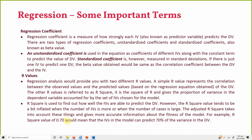For example, an R-square value of 0.70 would mean that the IVs in the model can predict 70 percent of the variance in the DV — 70 percent of the change in the dependent variable can be accounted for by those IVs in your equation.